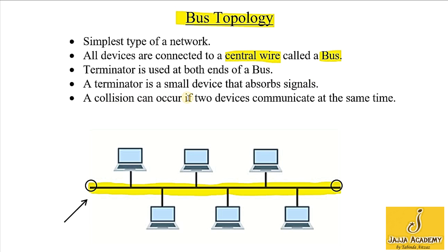A collision can occur if two devices communicate at the same time. This means there should be only one message on this central wire at a time. If two devices send their messages at the same time, then a collision of messages occurs.